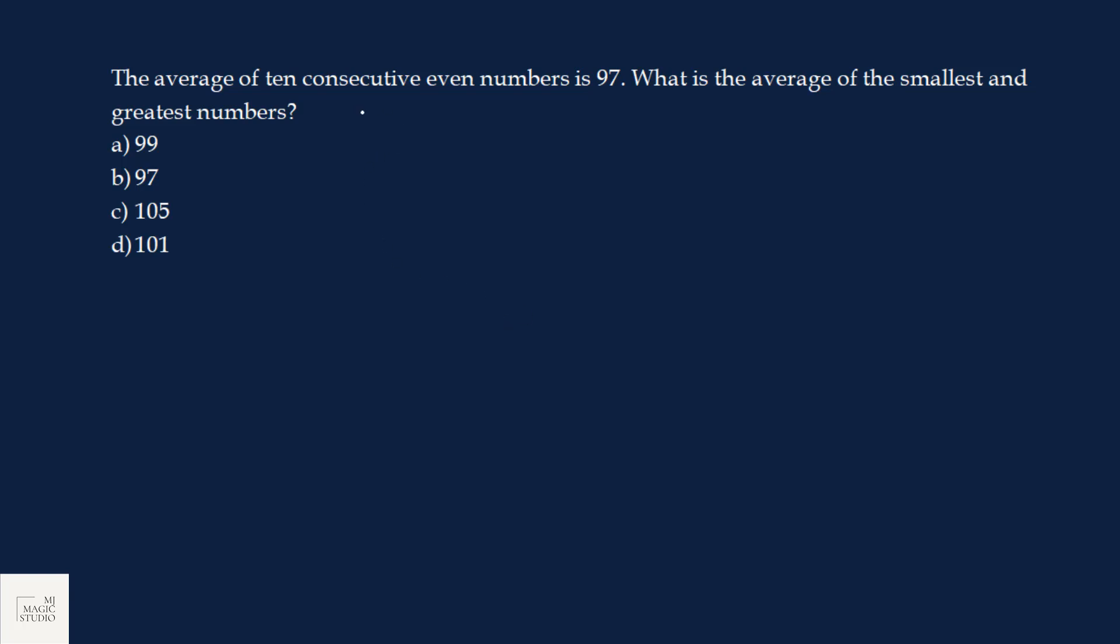The average of 10 consecutive even numbers is 97. Consecutive numbers are there. What is the average of the smallest and the greatest number? If consecutive numbers are there, their average is always the average of the smallest and the greatest number. So, in this case also, average of the smallest and the greatest number is nothing but average of the 10 consecutive numbers itself. That is 97.